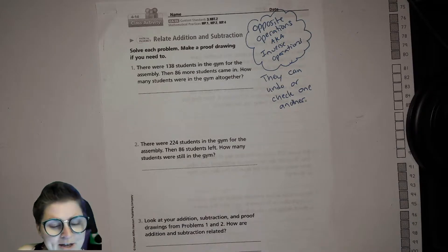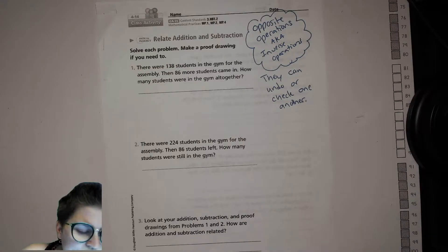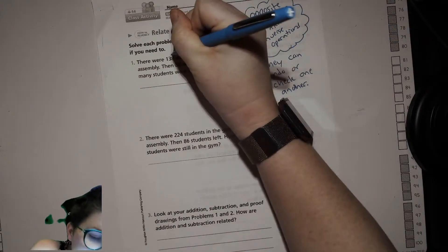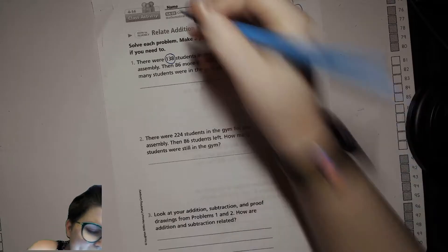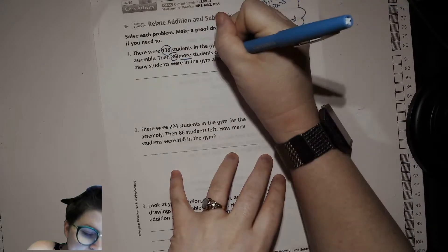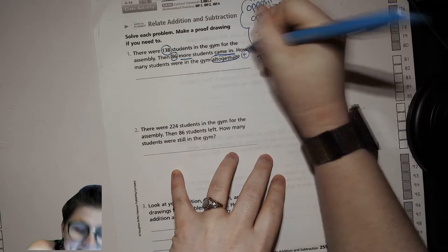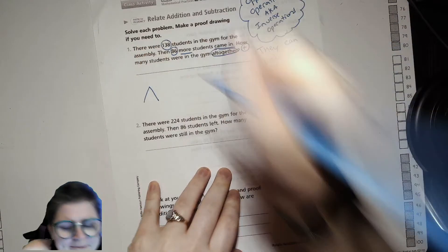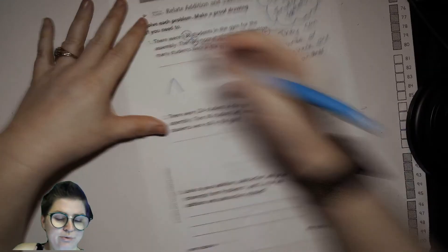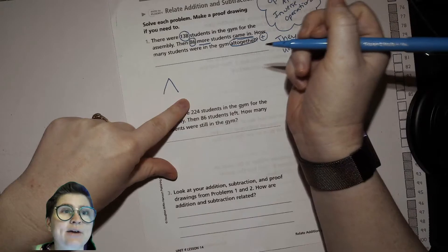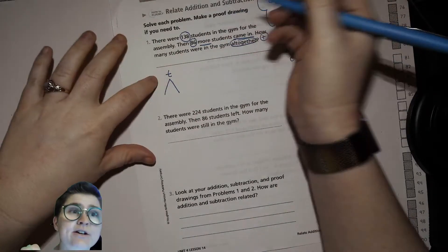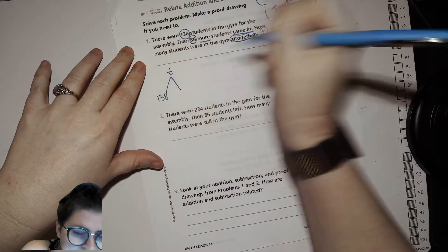Okay, so it says solve each problem, make a proof drawing if you need to. It doesn't say to make quick tens and hundreds, so for this I'm going to be drawing a math mountain. There were 138 students in the gym for the assembly, then 86 more students came in. How many students were in the gym all together? So that 'all together' is a hint that we're adding. I'm going to make a math mountain here and try to figure out which of these numbers I have. I have the number of students who were already in the gym and the number of students that were joining, and I'm looking for my total number of students. So I'm putting a T there to stand in place of my missing number, my 138 and my 86.